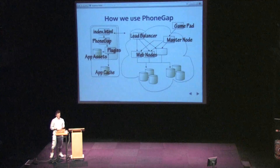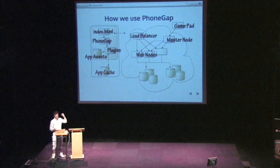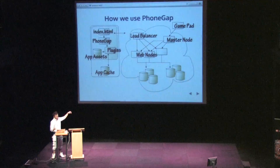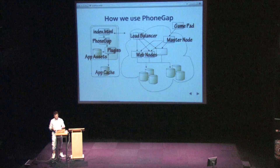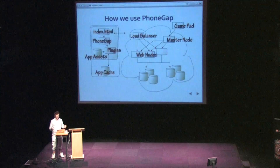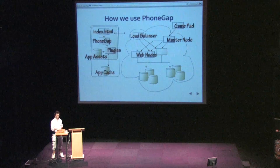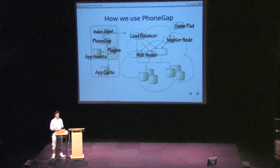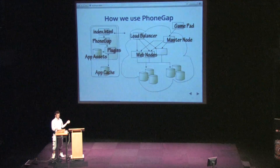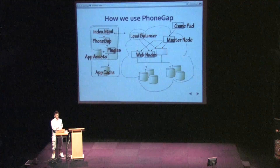On the left we have the device, and on the right we have the cloud stuff. Starting with the cloud: we have a bunch of web nodes — that's where Mage is going to be, and it basically scales exponentially depending on load. We have a master node that takes commands from GamePad and kicks out updates across all the web nodes. And we have a load balancer that spreads the load across the web nodes as people access from their devices.